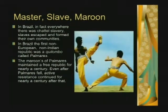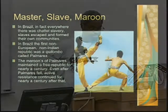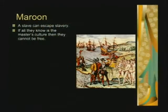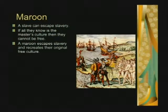Capoeira is done to music with a rhythm. The practice forms — which in karate we'd call kata — are called jogas; it's basically a fight and a dance with your opponent. A maroon is a slave who can escape slavery. But if all they know is the master's culture, they cannot be free because they will carry that culture with them. A maroon escapes slavery and recreates their original free culture — or a free culture based on improvising, following the twin African influences of tradition and innovation.